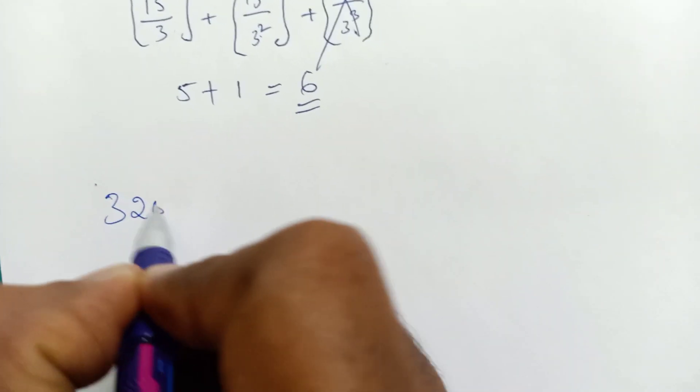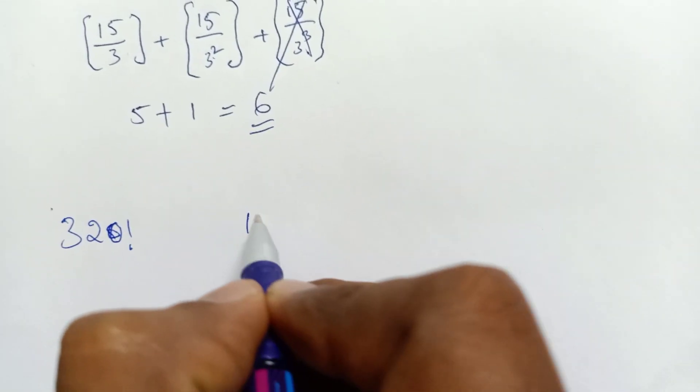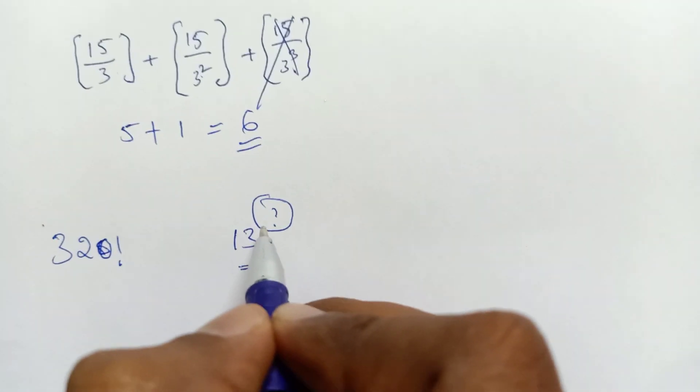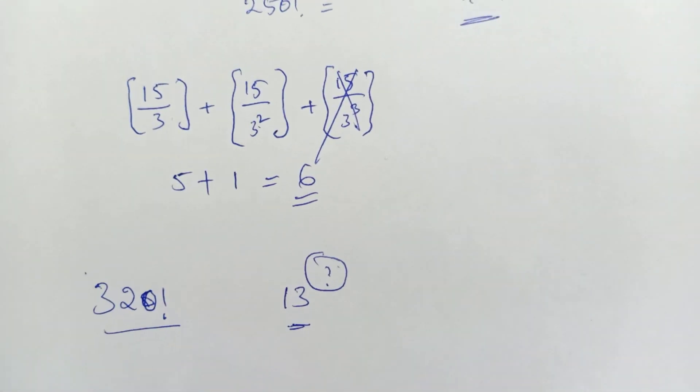Similarly, for 320 factorial, if we want to find the highest power of prime number 13, we use the same method.